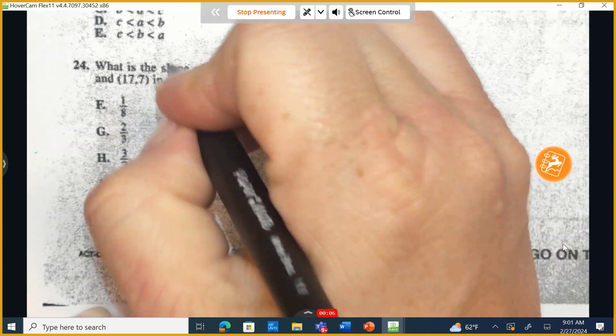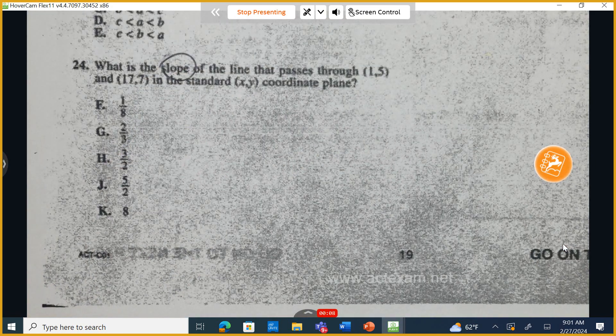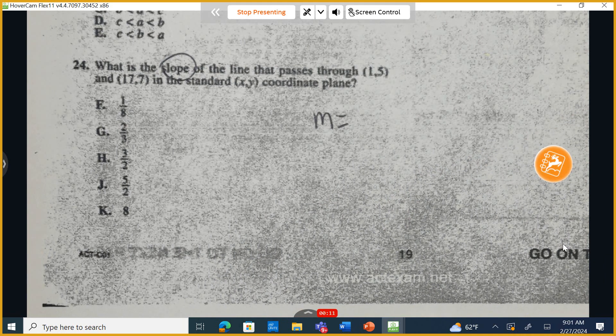First thing we're going to do is we want to find the slope. So a real quick reminder, slope describes the rise over run of a line.